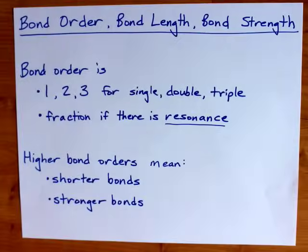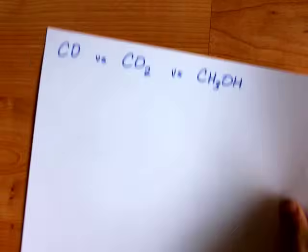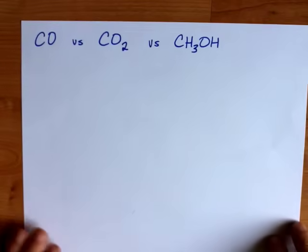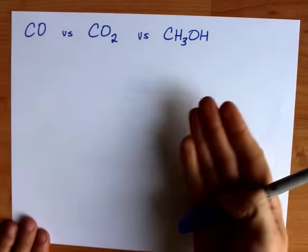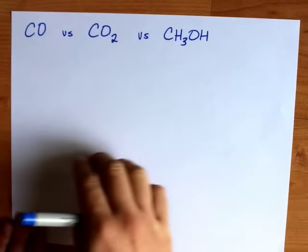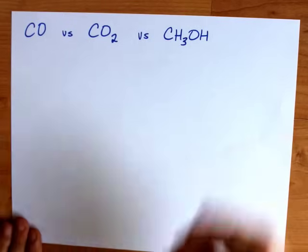We will use all of this as we do examples. I always recommend you draw the Lewis structures because that's how you can verify that you have the bond order you think you do.